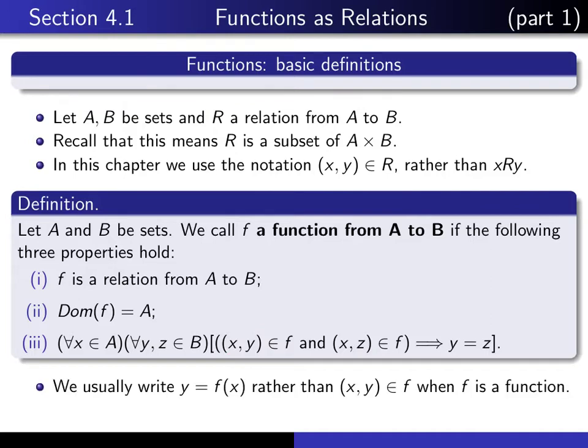When we're dealing with functions rather than just merely relations, we're going to use this notation rather than this notation. And the reason being that since the second component in the relation is uniquely determined according to this property here, there can only be one such thing, and so we can refer to it as f of x. And when we refer to this f of x, we're going to refer to it as the value of f at x.